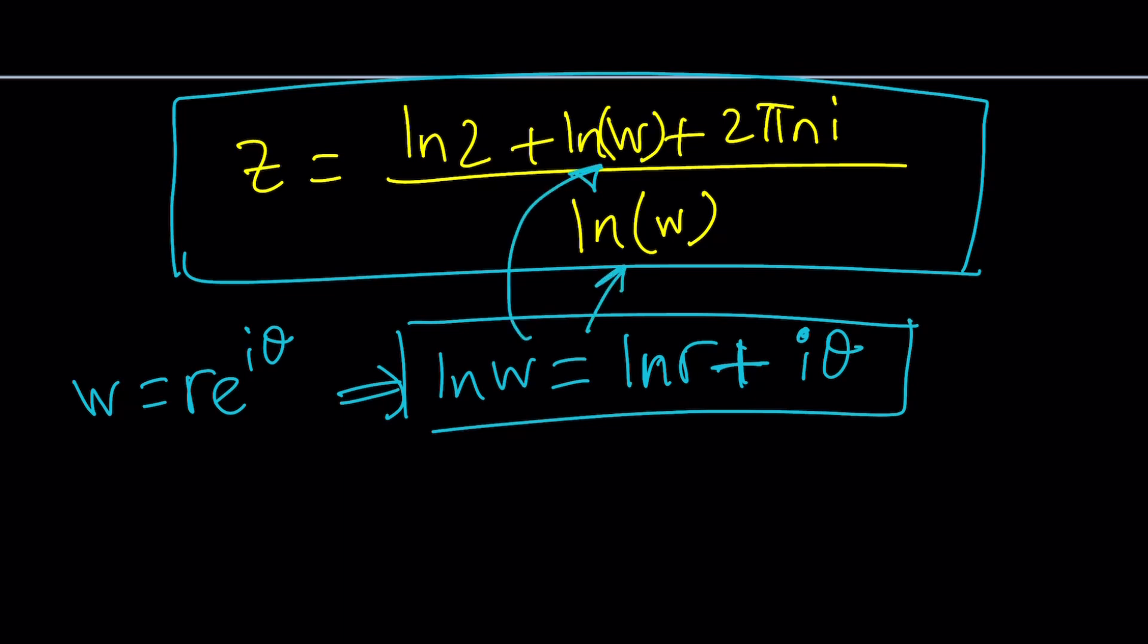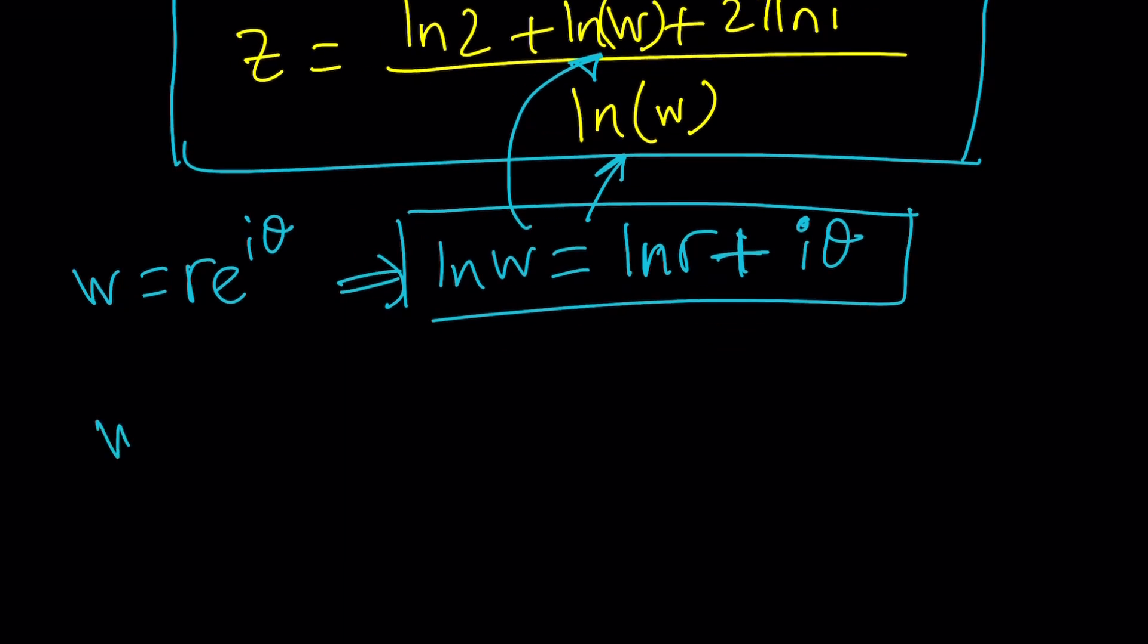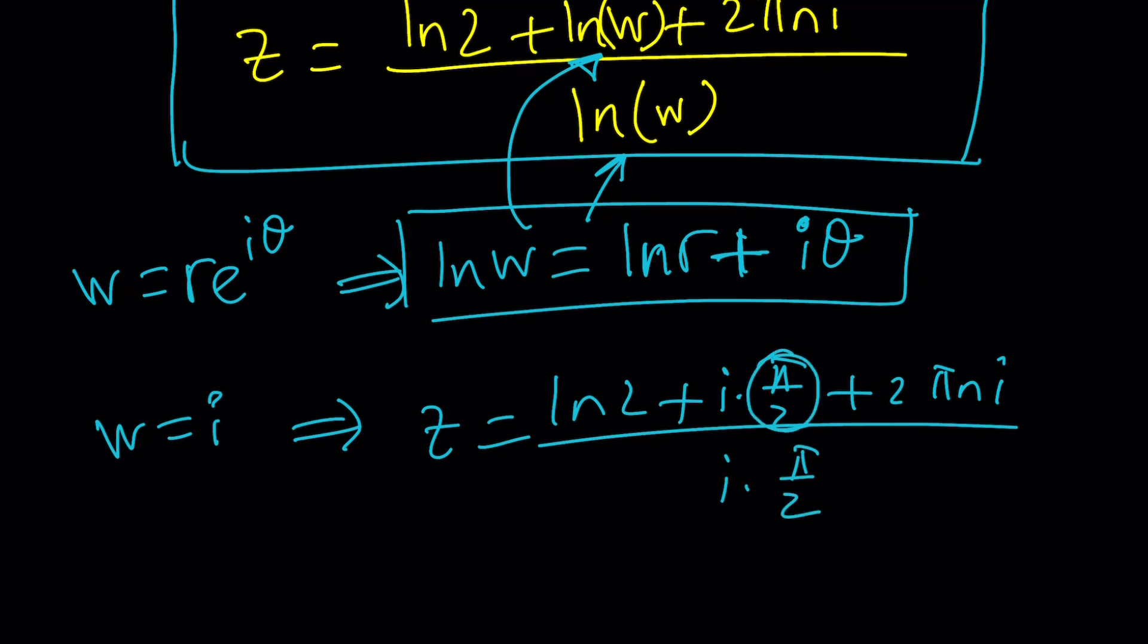In other words if we know w we can find z. For example if w is equal to i then of course from here z equals ln 2 plus ln i which is i times pi over 2 plus 2 pi n i and then we would divide it by i times pi over 2. But again I could consider adding multiples of 2 pi to this 2 pi ki whatever and then that would give me a more general solution. Okay great so that's pretty much it.